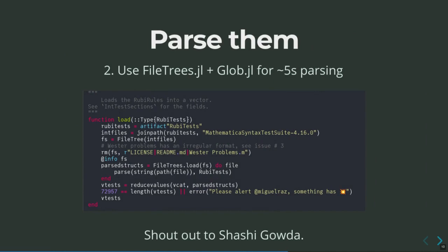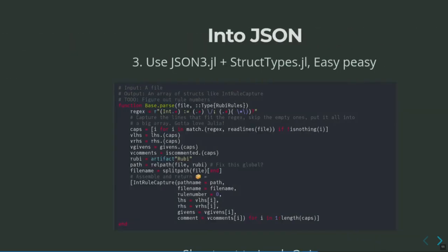Next, you want to parse them. You can use this amazing package called file trees by Shashi Gowda, and it takes about five seconds to parse 8,000 of these rules. The magic line is filetrees.loadfs_to_file, and I overloaded the parse function accordingly. Every single integration rule is a single line, so you can load all the tests — each test is just a single line in structured folders. With file trees you can auto-parallelize all of that if you can reduce your problem to parsing a single line. It might also be more profitable to use a Maple syntax suite because it's friendlier on Julia syntax.